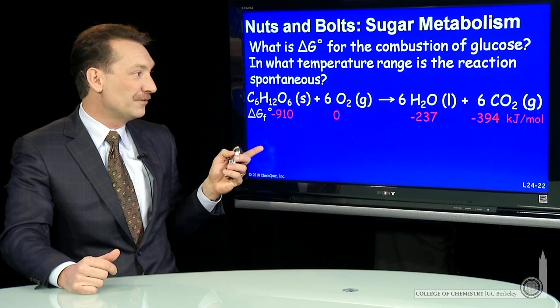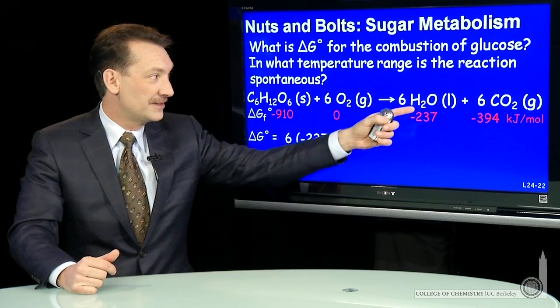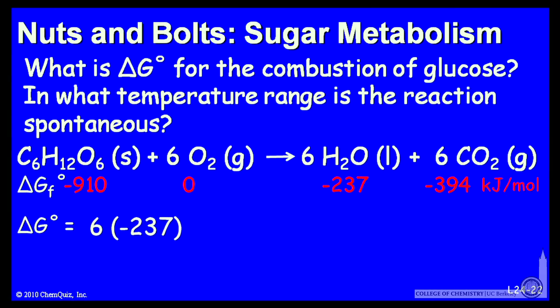So I can take now the free energy for the reaction as products—6 moles of water, 6 moles of carbon dioxide gas—minus the reactants, a mole of glucose. Of course, oxygen is zero. So some simple arithmetic gives me minus 2876 kilojoules for this chemical reaction.